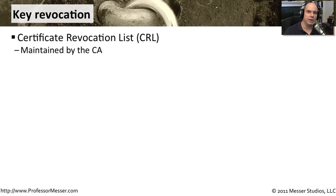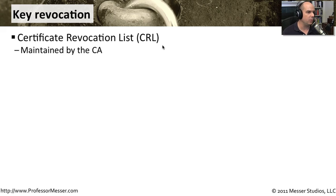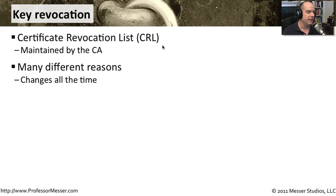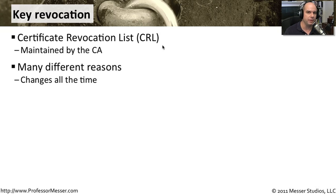Key revocation is a natural part of the certificate lifecycle in your PKI. Generally, we'll use something like a certificate revocation list, or a CRL, that's maintained by the certificate authority to look for keys that have been revoked. There are a lot of different reasons for revoking keys, and one of the things we need to think about is what changes are going to cause a key to be revoked. Sometimes it's just a natural part of the process where a key is expiring and we might want to revoke it.